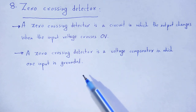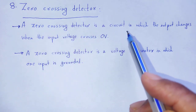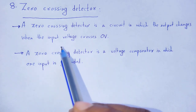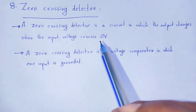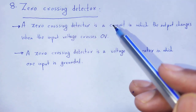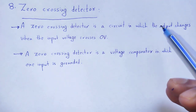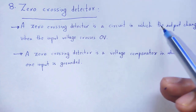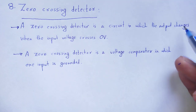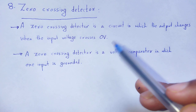What is a zero crossing detector? A zero crossing detector is a circuit in which the output changes when the input voltage crosses zero volt. Therefore its name is zero crossing detector. It detects how the input voltage changes with respect to the output voltage when it crosses zero volt.